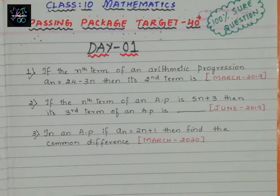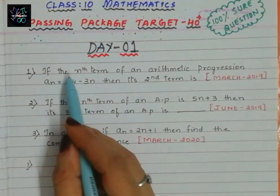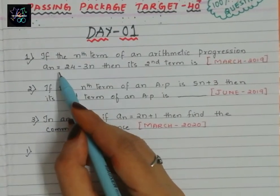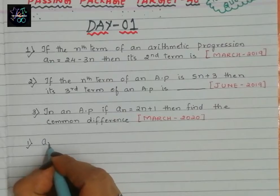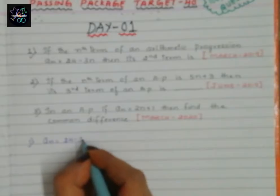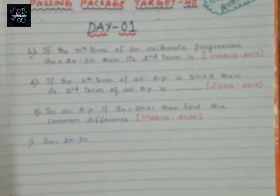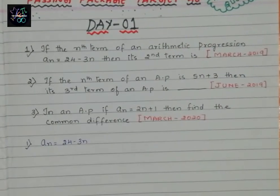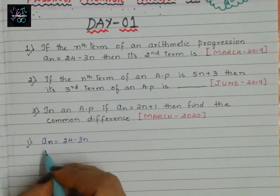Let us start solving the first question. If the nth term of an AP — that is Arithmetic Progression — an is equals to 24 minus 3n, then its second term is what? We have to find the second term, so in place of n we will write 2.